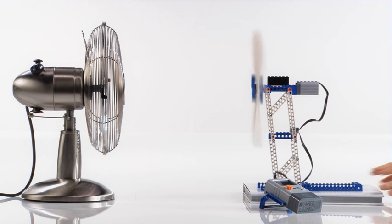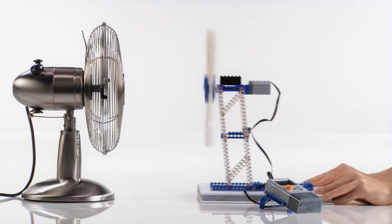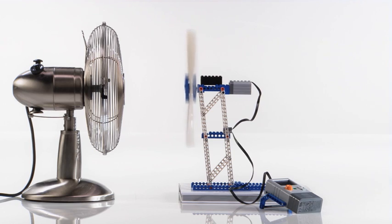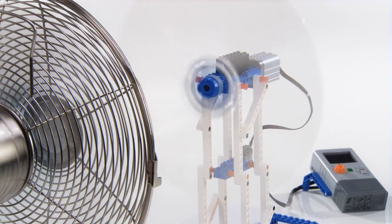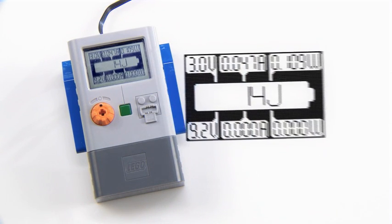Move the wind turbine closer to the fan, halving the distance. As input readings change on the meter, you can clearly see the change in the wind turbine's power performance.